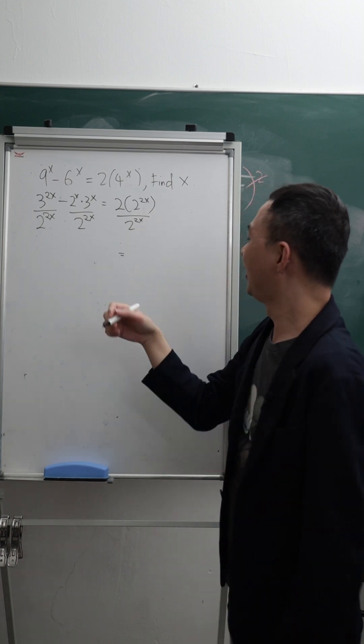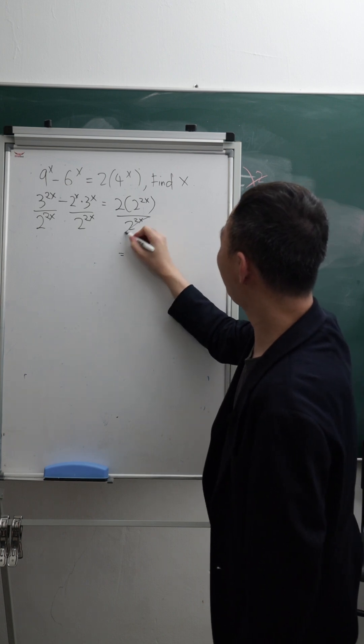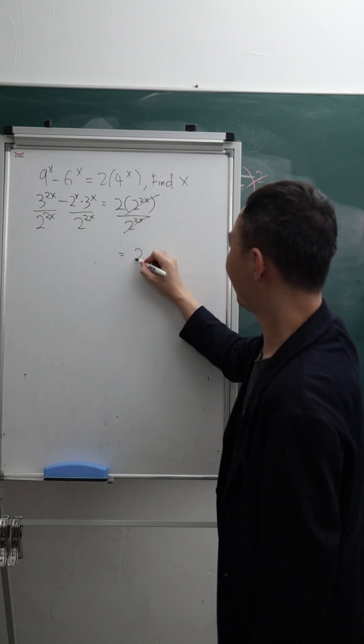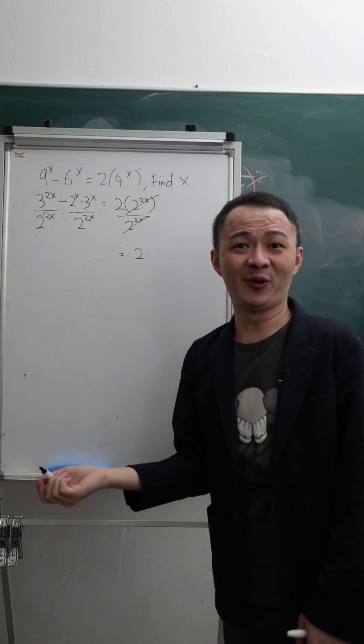So on my right hand side here, this one is basically 2 power of 2x and 2 power of 2x, I cut already, left with 2 here. This one, I have the same power.